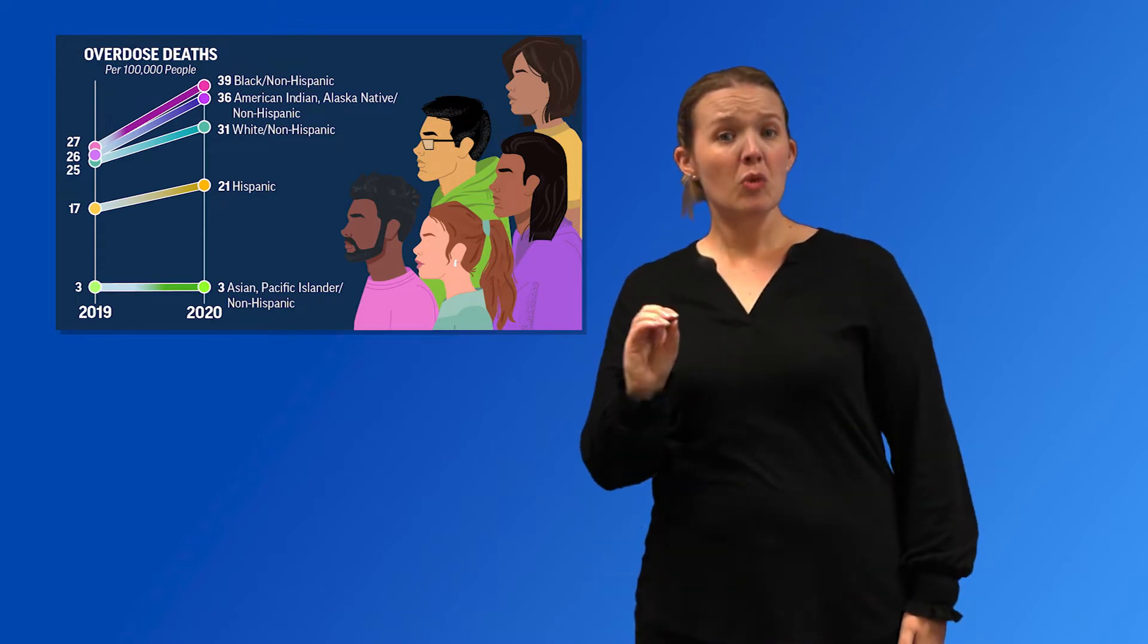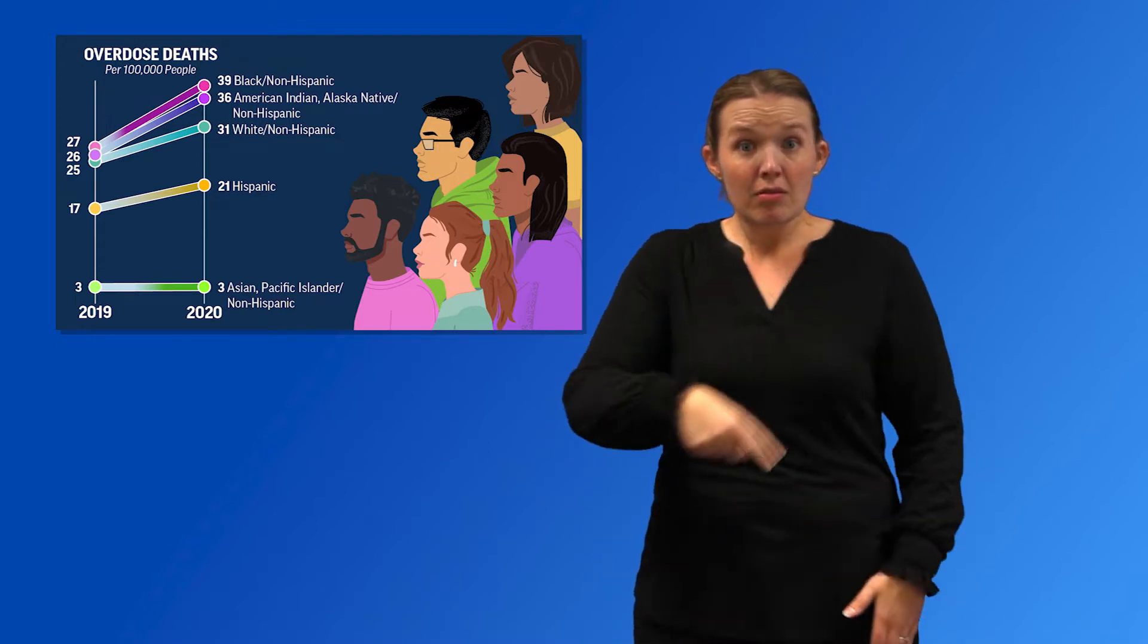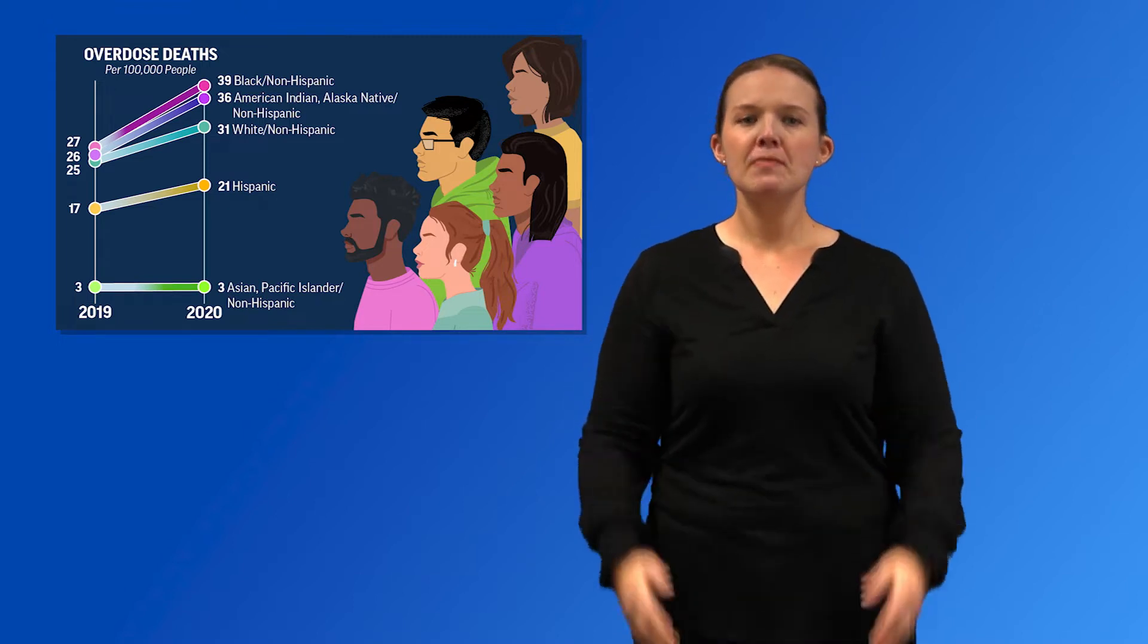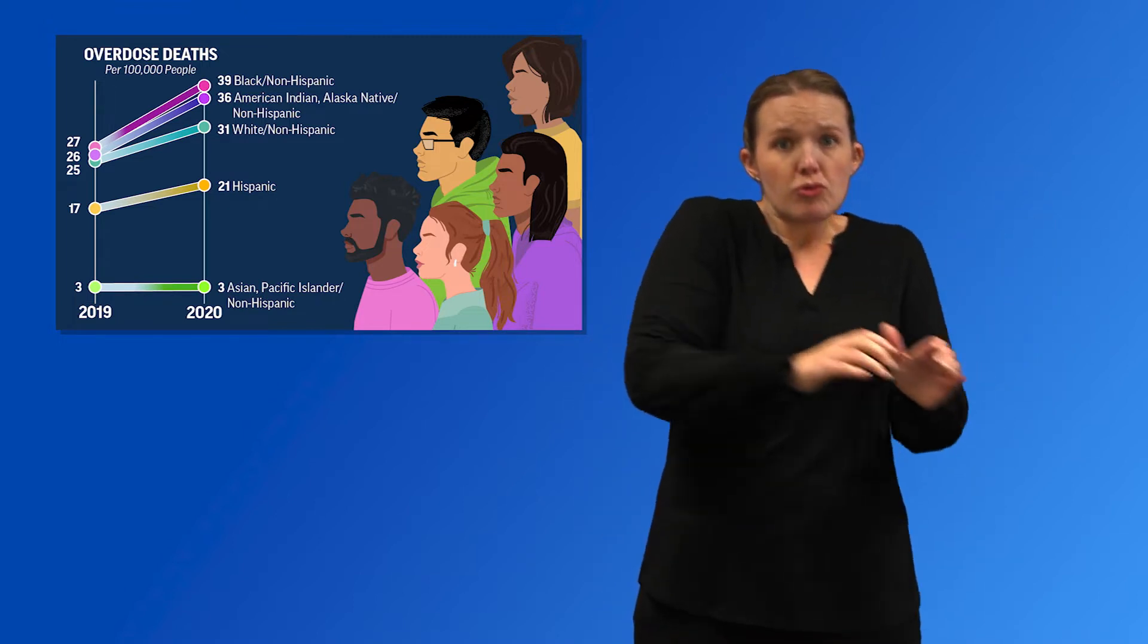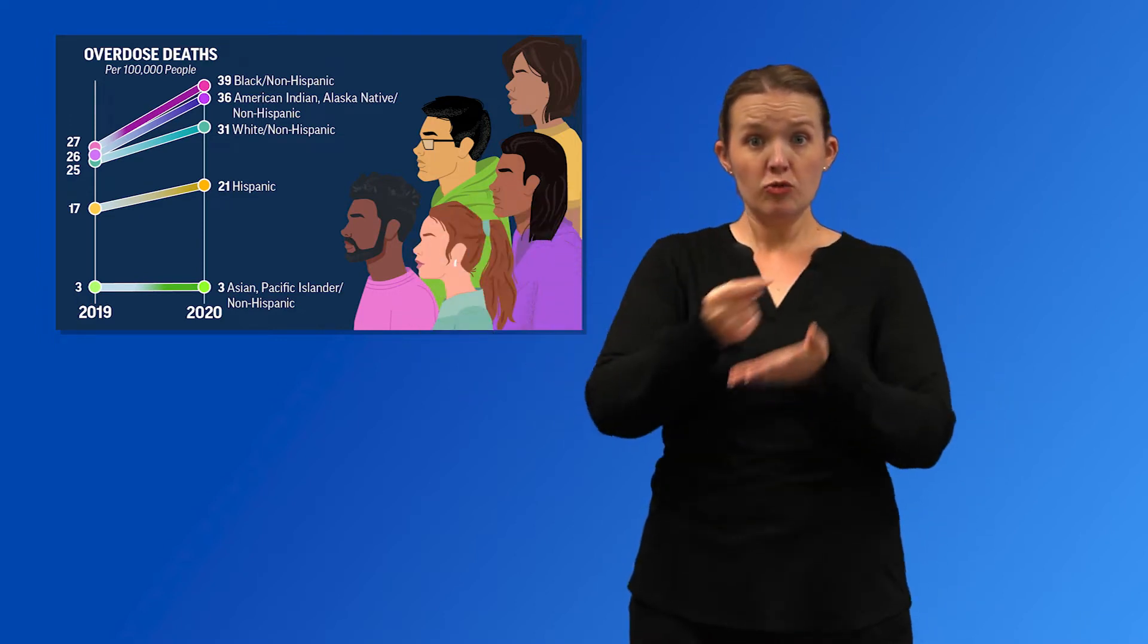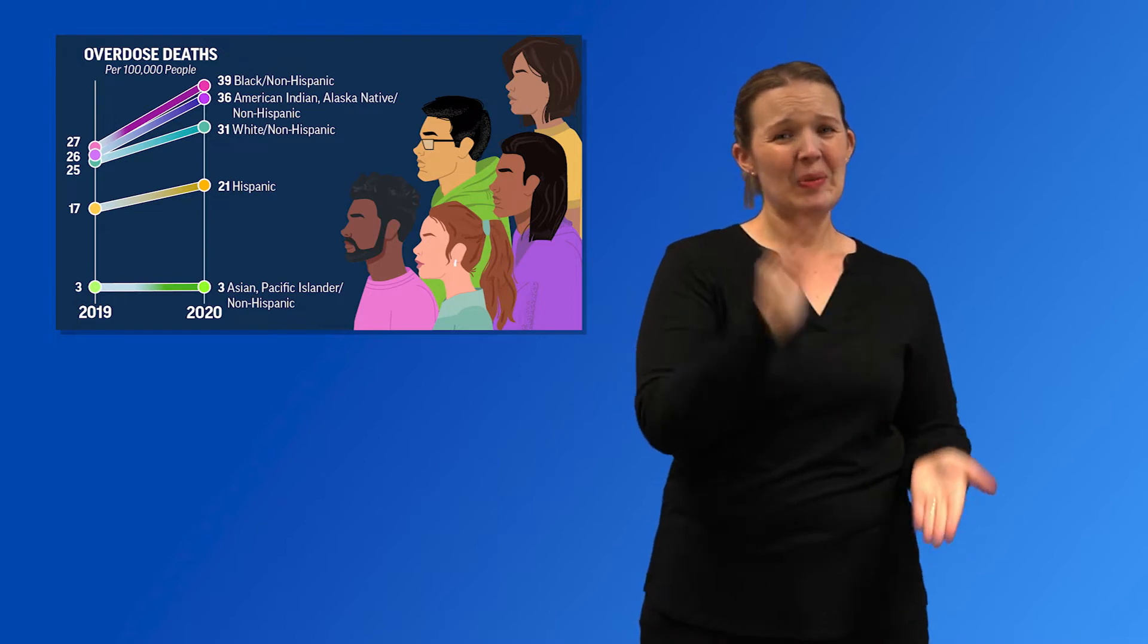Most people who died by overdose had no evidence of substance use treatment before their deaths, and a lower proportion of people from racial and ethnic minority groups had evidence of prior treatment compared with white people.